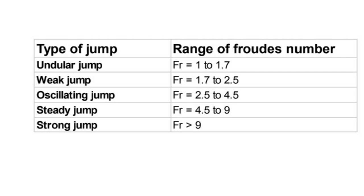If Froude number lies between 2.5 to 4.5, it is called an oscillating jump. If Froude number lies between 4.5 to 9, it is called a steady jump. If Froude number is greater than 9, it is called a strong jump.